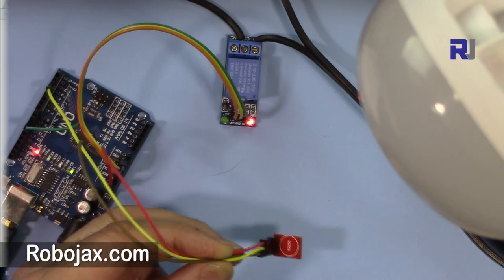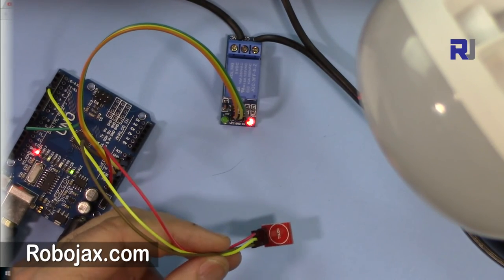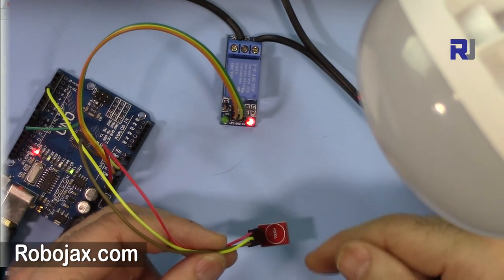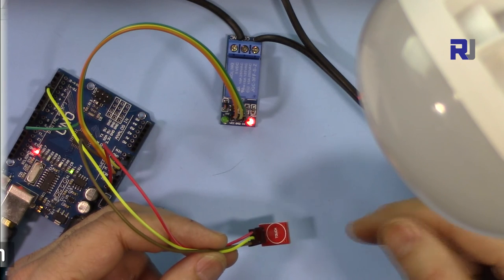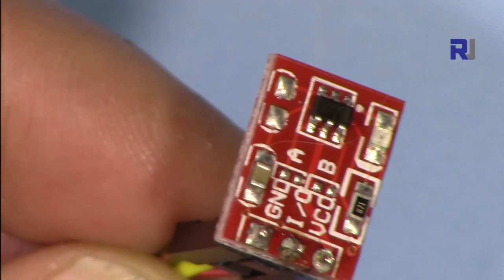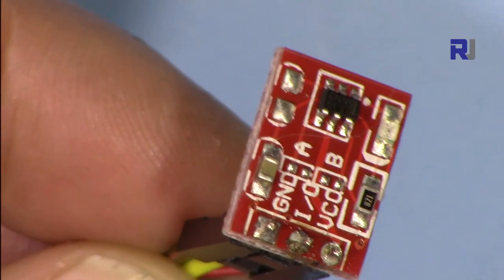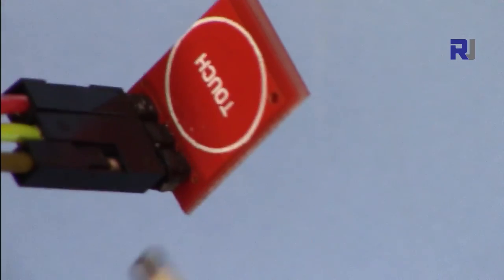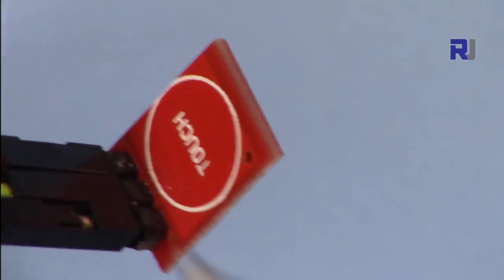When you touch it it's on, and when you touch it again it goes off. Let me explain the code. The code will be provided in the description which you can click and go to robojax.com/learn/Arduino. So this is the TTP 223, this is the touch module. From this side this is the touch area. I've soldered it this way but you can solder it the other way.